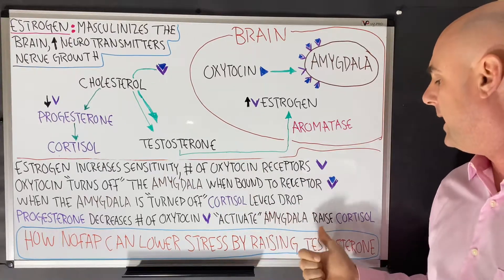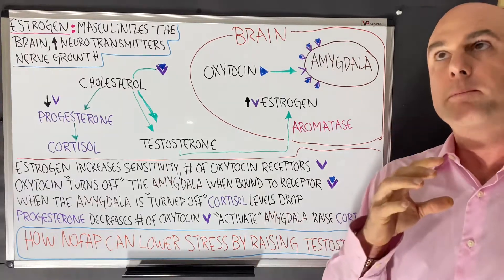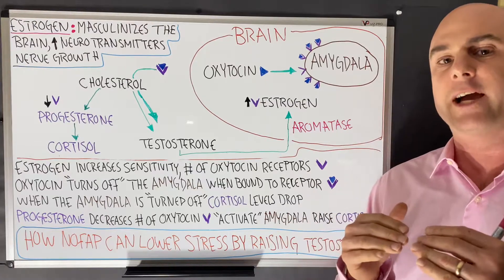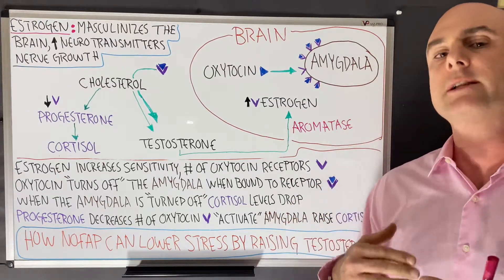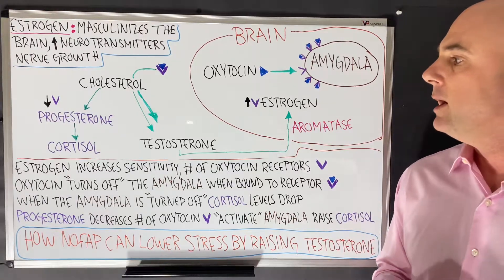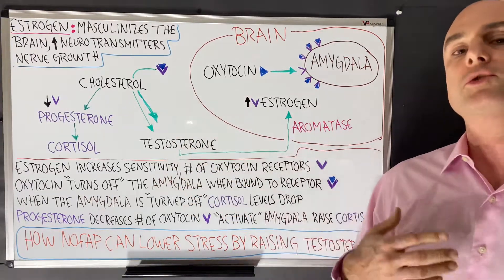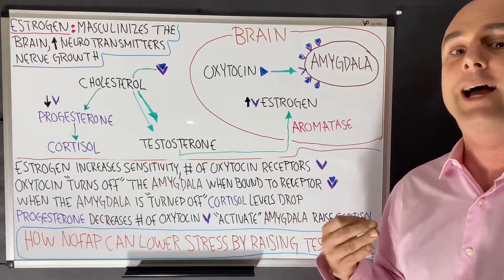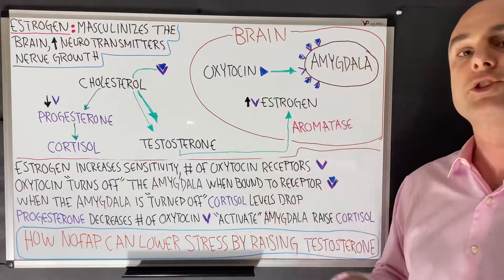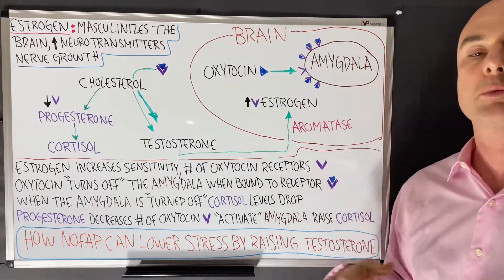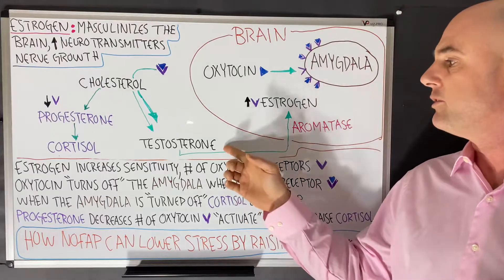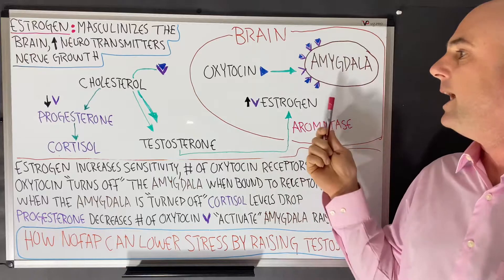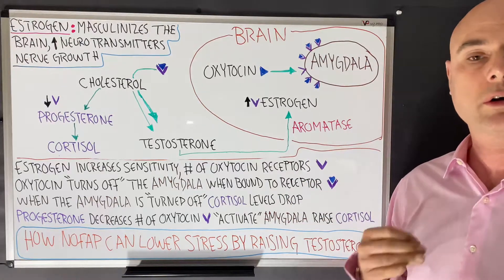Conversely, progesterone decreases the number of oxytocin receptors, which activates the amygdala and raises cortisol levels. Progesterone and estrogen tend to act in a seesaw fashion — when there's more estrogen, there's likely less progesterone. This all starts with raising testosterone levels through nofap, which allows us to produce estrogen in the brain via aromatase, and it's this estrogen in the brain that actually helps lower cortisol levels.